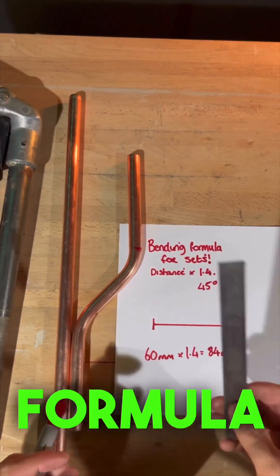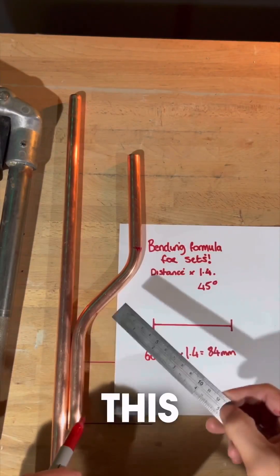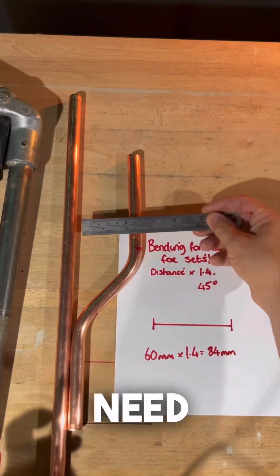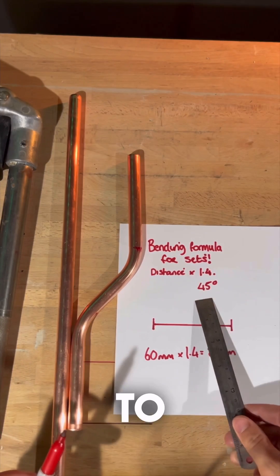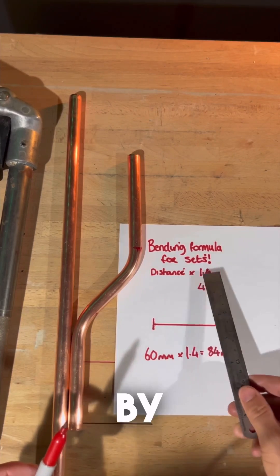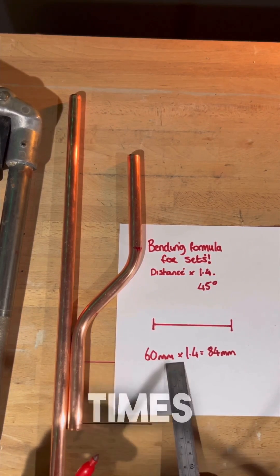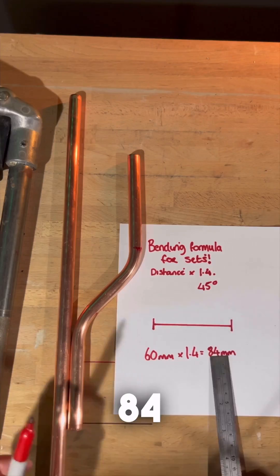I'm going to show you a quick bending formula that we can use for bending sets like this right every time. So you need to work out your set distance, so this is 60mm, and to use 45 degree bends you need to times it by 1.4. So I've got 60mm times 1.4 equals 84mm.